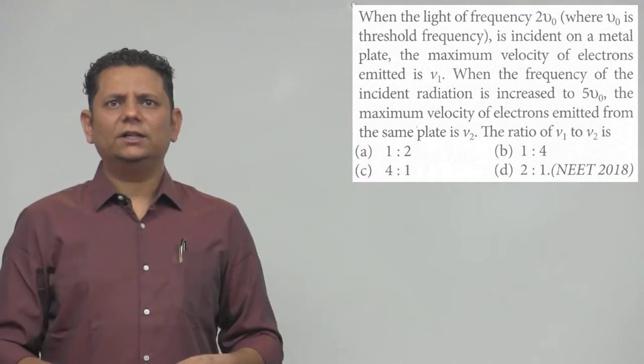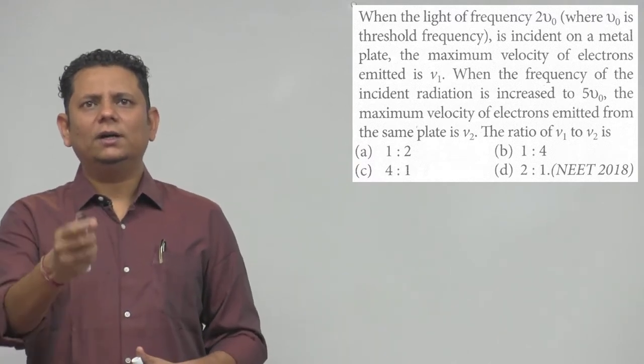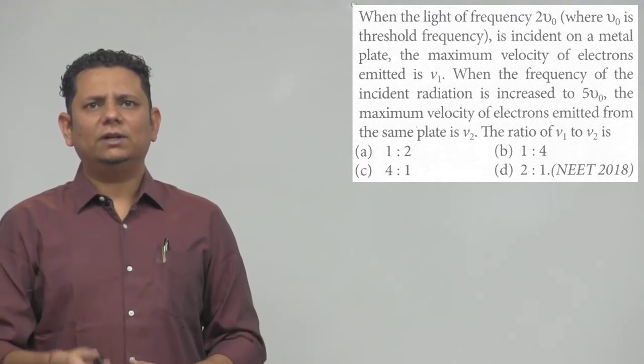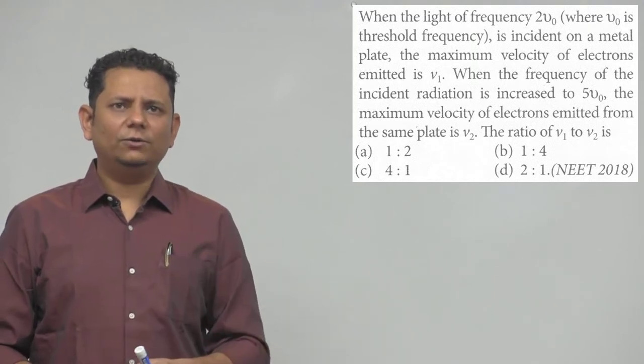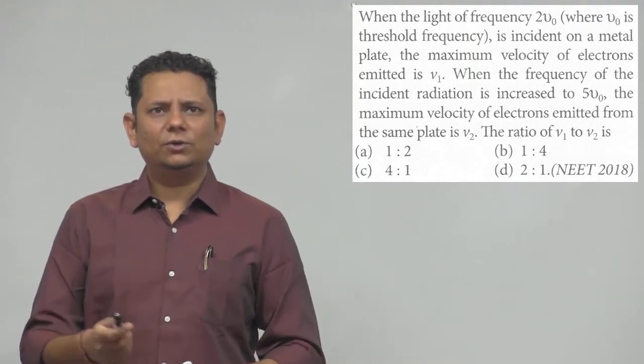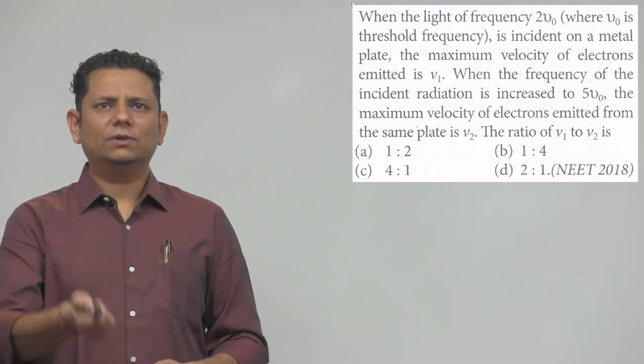the incident radiation is increased to 5ν₀, the maximum velocity of the electrons emitted from the same plate is V₂. The ratio V₁ to V₂ is: 1 is to 2, 1 is to 4, 4 is to 1, or 2 is to 1. This is NEET 2018.